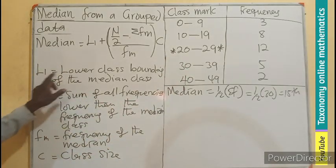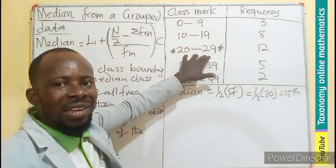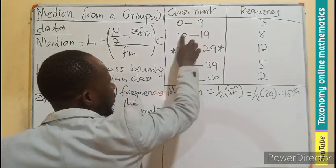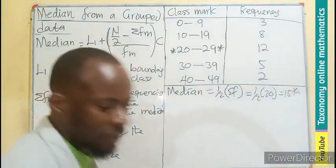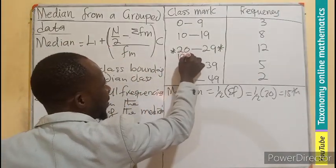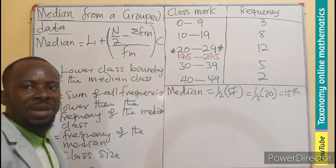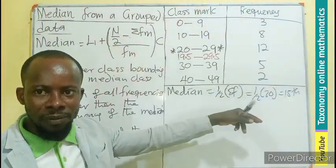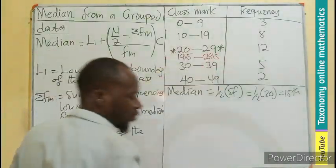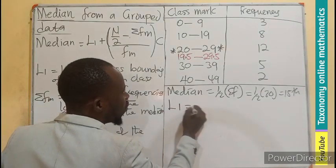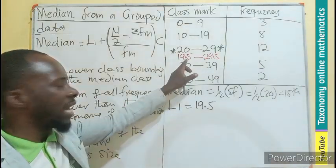But since the first one is talking about the lower class boundary of the median class, this must be written in the class boundary. Meaning the difference between this is one. Half of that is half. So you subtract half of this. So I will be having 19.5 to add a half to this, 29.5. That becomes the median class boundary. So the lower, meaning the L1 is going to be this. So from this question, I will have my L1 equals to 19.5. 19.5 is the lower class boundary.